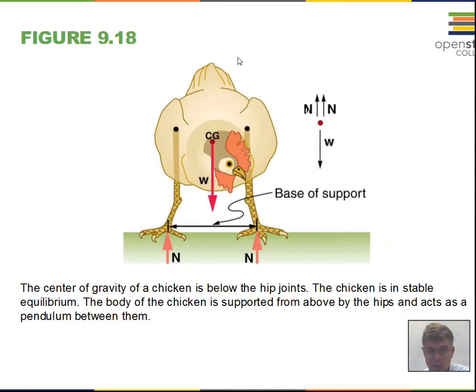Chickens—so they have their hips up higher here. Their center of gravity is below the position of the hip joints. That gives them more stability. That keeps their center of gravity inside their base of support more easily, having the center of gravity below the hip joints.